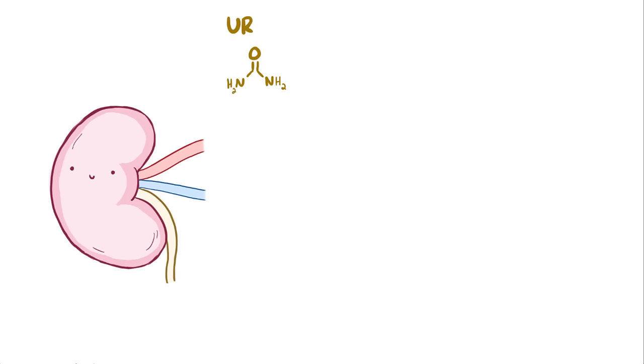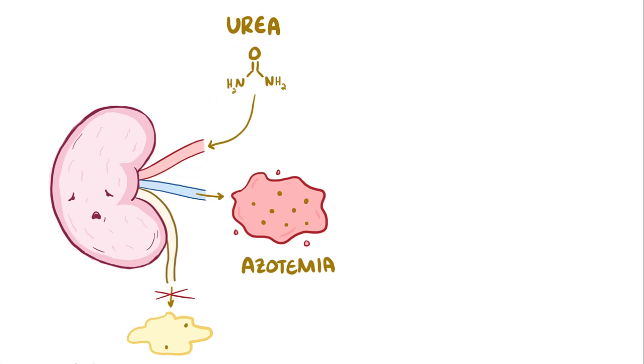Now, normally, urea in the blood gets excreted in the urine, but when there is a decreased glomerular filtration rate, less urea gets filtered out, and therefore it has nowhere else to go besides the blood, and so it builds up in the blood which is a condition called azotemia.